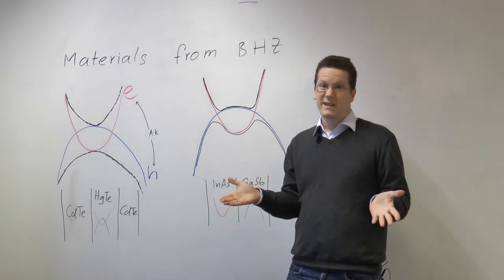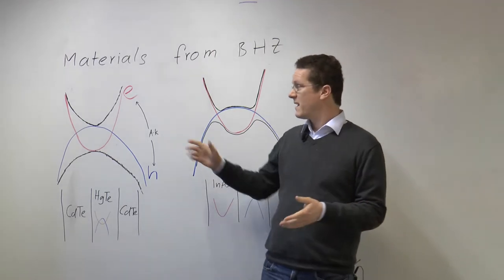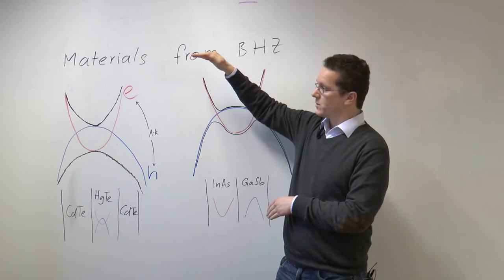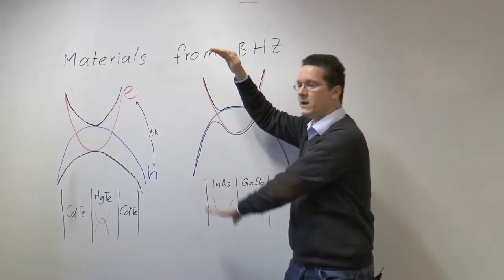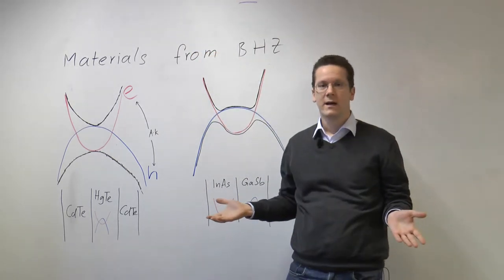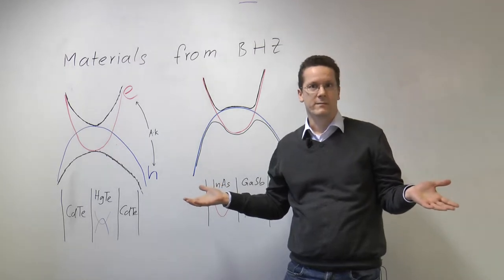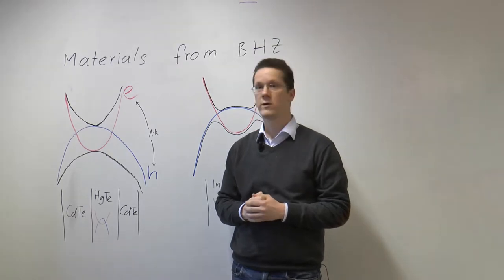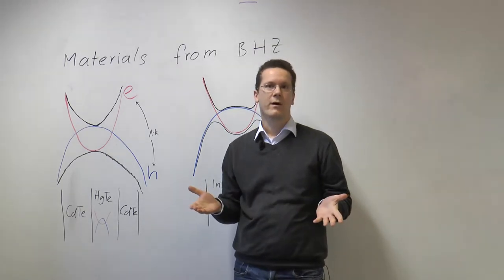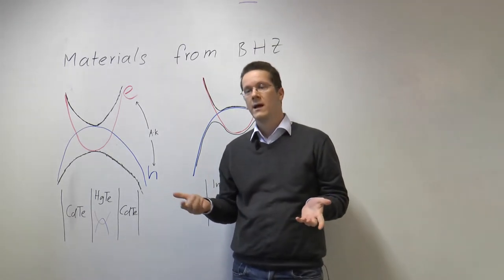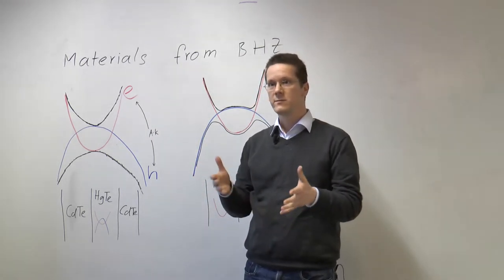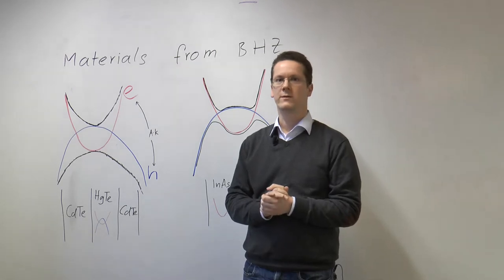Now what's missing usually in semiconductors is the band inversion because usually you have the electrons on top, then you have a band gap, and then you have the holes at lower energies, so that's a trivial band structure. But it turns out that there's one semiconductor in nature, namely mercury telluride, that's an alloy of mercury and tellurium, that has this band inversion quite naturally. So this in principle is a natural candidate material for a topological insulator.